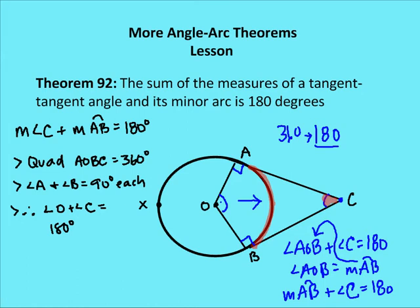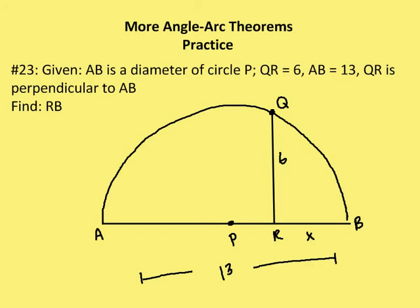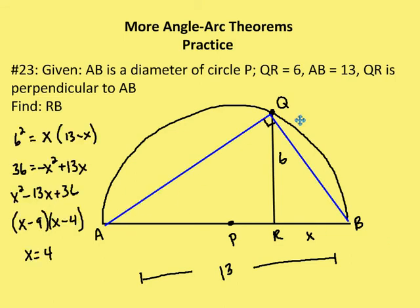Let's move on to the practice problems — I believe we have three. The first one: AB is a diameter of circle P, QR equals 6, AB equals 13, and QR is perpendicular to AB. We need to find RB, so I'll identify RB as X. I draw a line from A to Q and from Q to B, and I know that angle AQB is a right angle because this inscribed angle intercepts a semicircle.